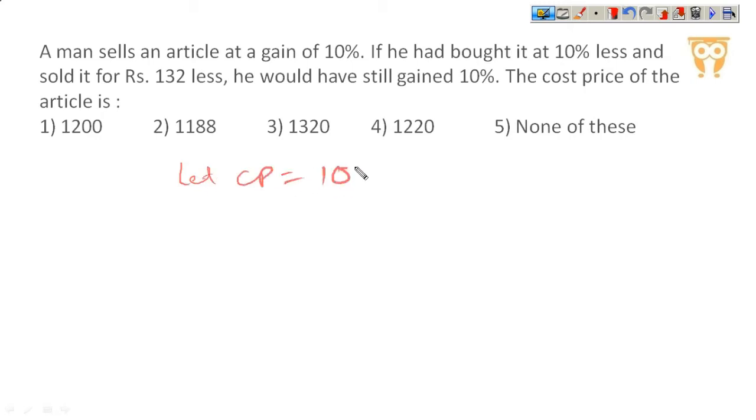Let CP is equal to x. We can't take 100 because the actual value is plus or minus, we can't assume any value. So it becomes x. And if we take x, we can take 100x. So 100x is the cost price. So this is the original CP, and original SP is 110x with 10% gain.